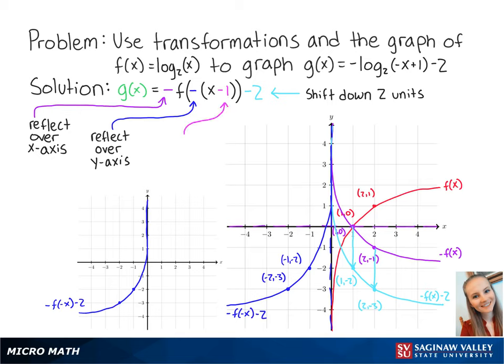Subtracting 1 from x means that we will shift our new graph to the right by 1 unit. So our new points are at negative 1, negative 3 and 0, negative 2. Also notice that the asymptote on the y-axis also shifts to the right by 1 unit. Connecting these points, we get the graph of g of x, and this is the final answer.